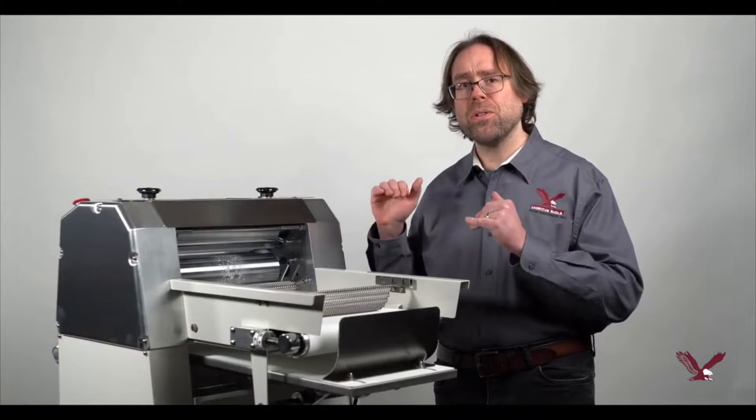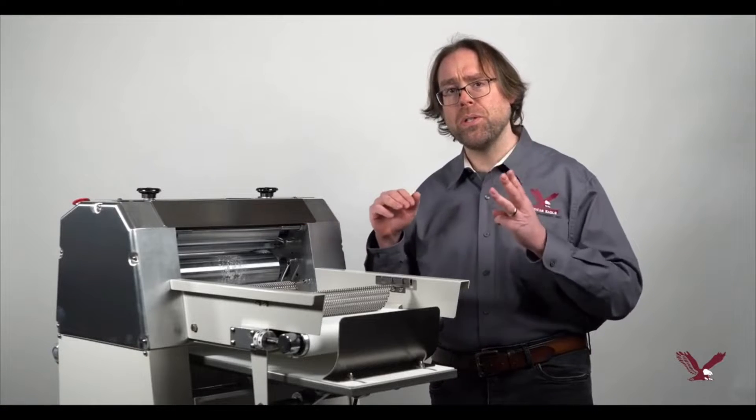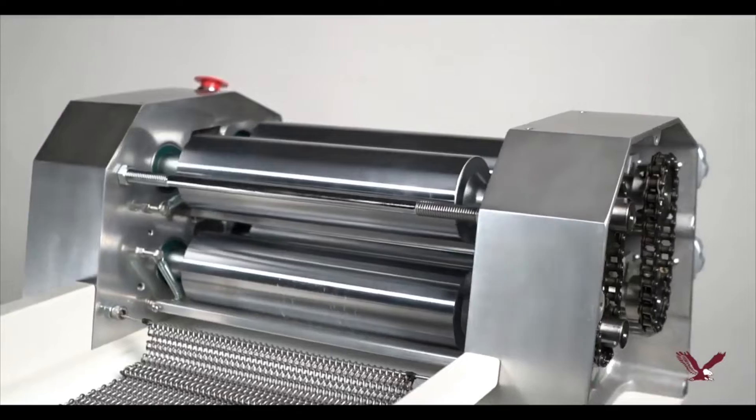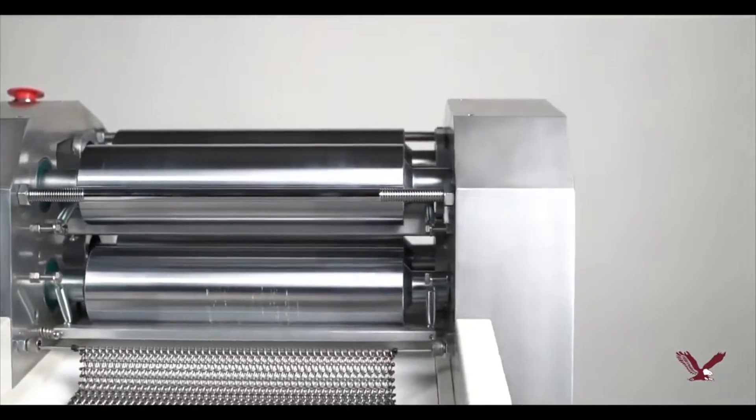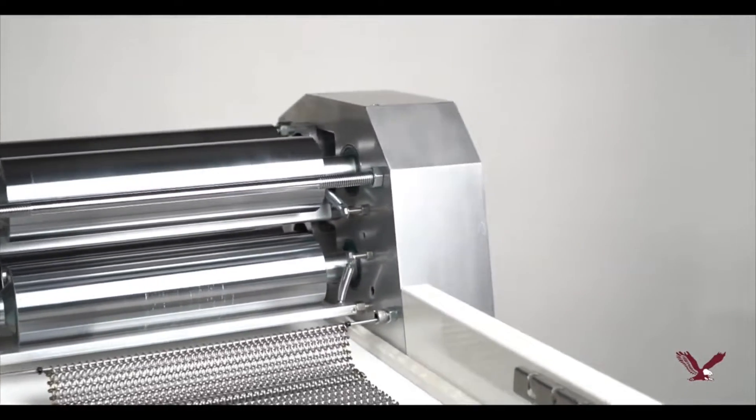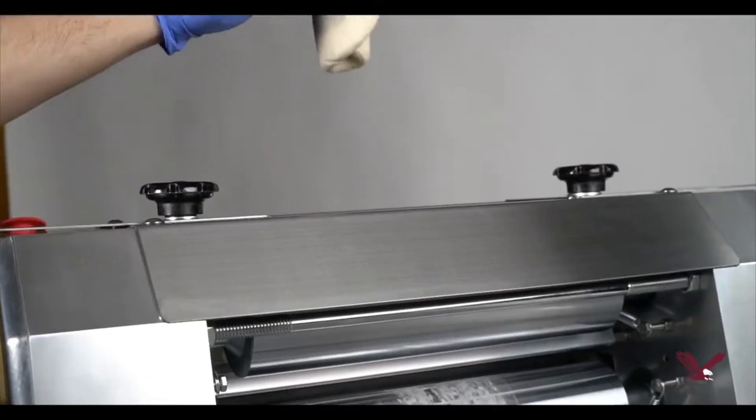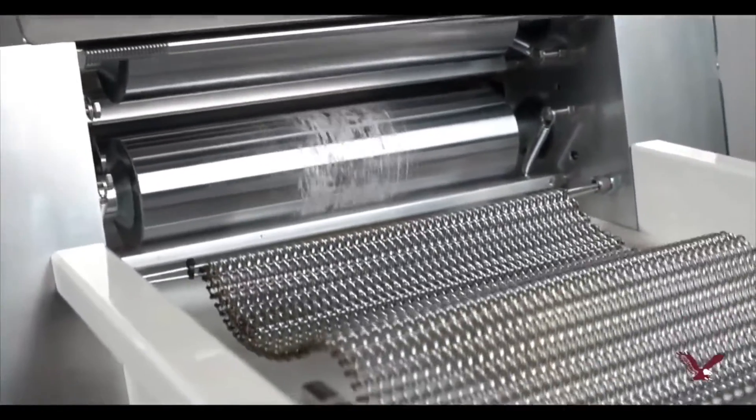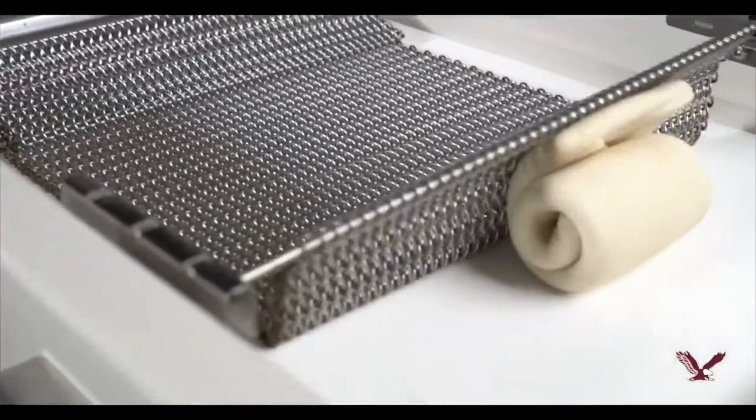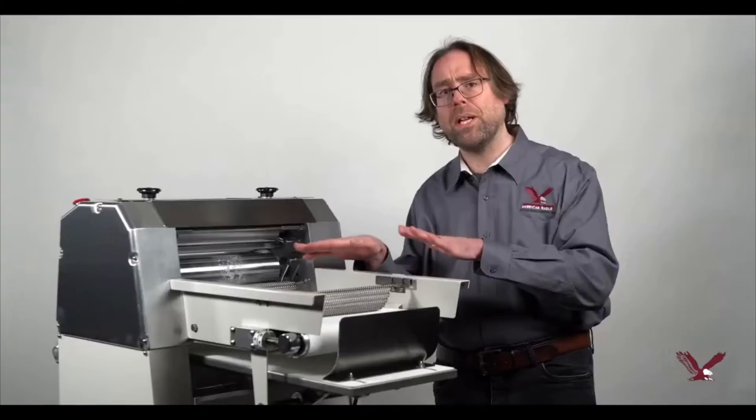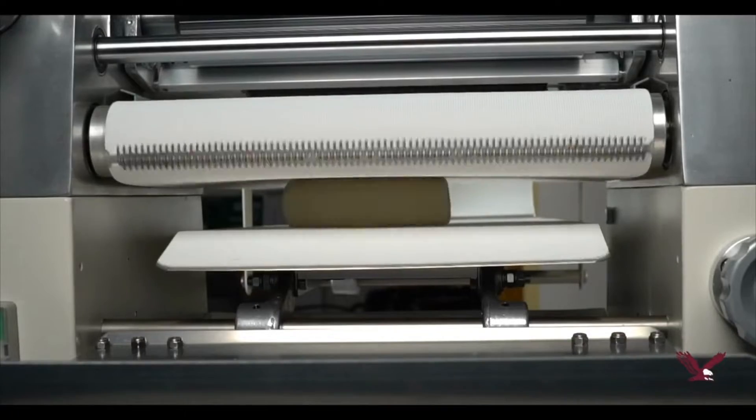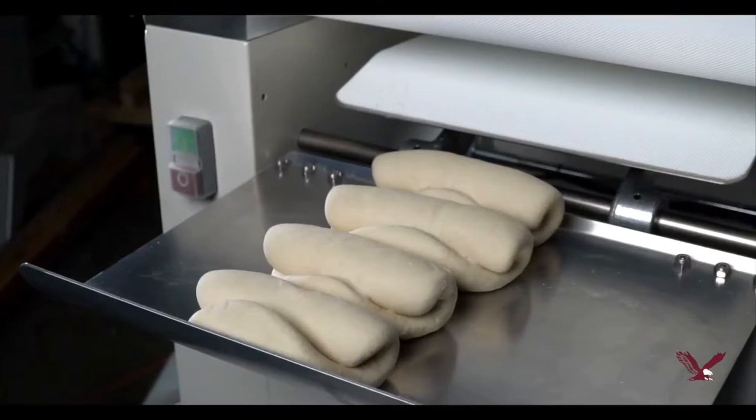Our dough molders process the dough in three distinct stages. First, the dough is pressed against two stainless steel rollers to get the right thickness. Then, it goes through this curling chain to curl the dough. Finally, the dough is pressed against a pressure plate that squeezes out any extra air and forms the dough into its final shape.